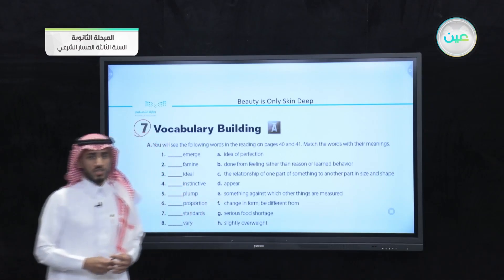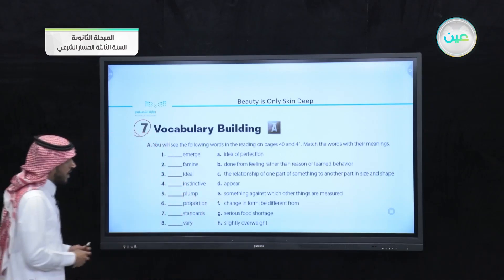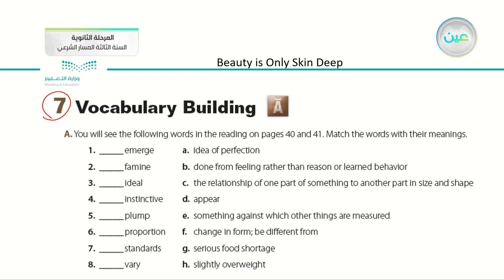These words are: emerge, famine, ideal, instinctive, plump, proportion, standards, and vary. We talked about the meaning of each one of them and explained them.